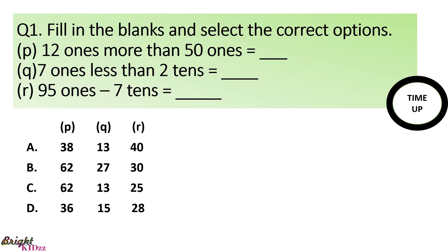So, here we will see 50 ones is 50 and 12 ones is 12. So, 50 plus 12 will be equals to 62. 7 ones less than 2 tenths means 20 minus 7. So, the answer here is 13. 95 ones minus 7 tenths means 95 minus 70. So, here the answer will be 25. So, the answer here is C.